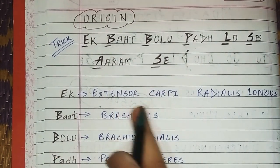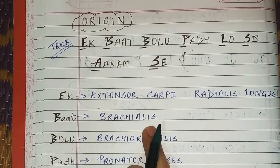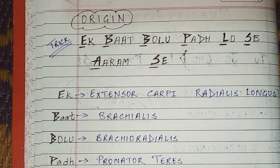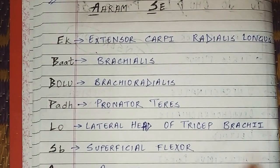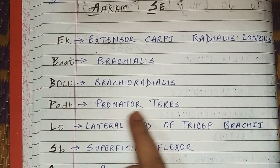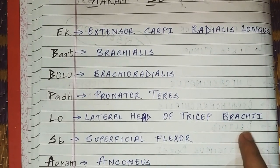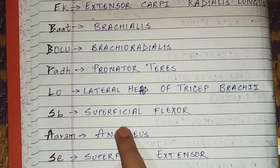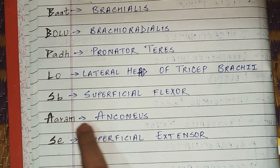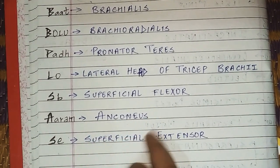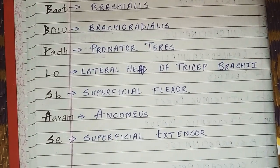Let's repeat the origin trick. E — Extensor Carpi Radialis Longus. B — Brachialis. Then baat, B — Brachioradialis. Padh, P — Pronator Teres. L — Lateral head of Triceps Brachii. Sub, S — Superficial Flexor muscle. Aaram, A — Anconeus muscle. Se, S — Superficial Extensor muscle.